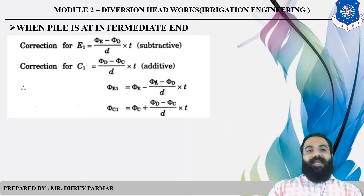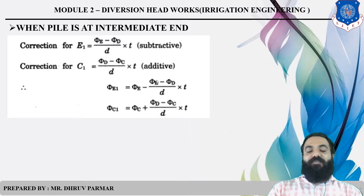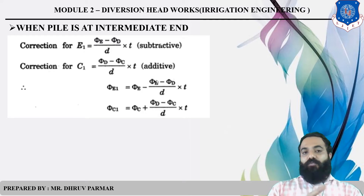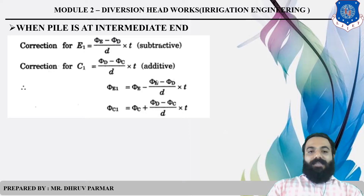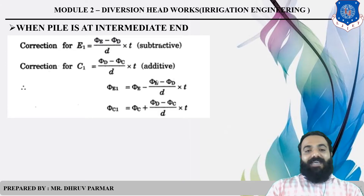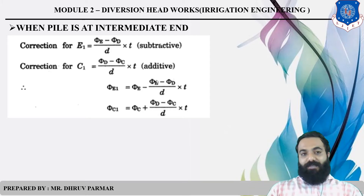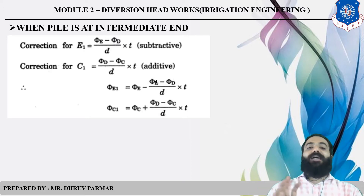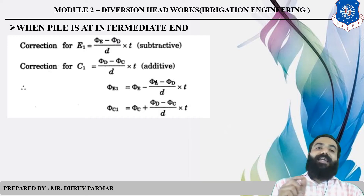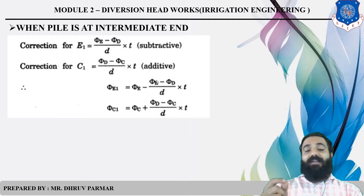For the pile at the intermediate end, the correction for E is (phi_E minus phi_D) divided by D multiplied by T, and the correction for C is (phi_D minus phi_C) divided by D multiplied by T. The pressure at E1 equals phi_E minus the correction (subtractive), while the pressure at C1 equals phi_C plus the correction (additive). Remember: at intermediate point E, correction is minus; at C, correction is positive.